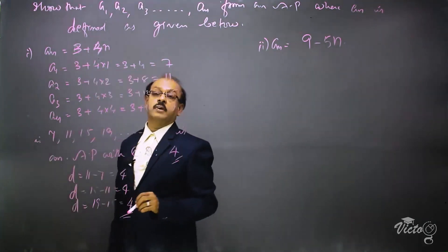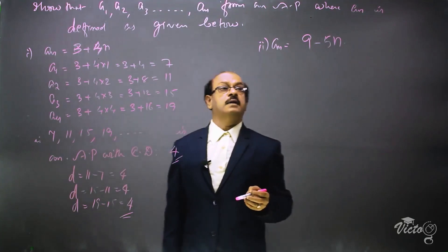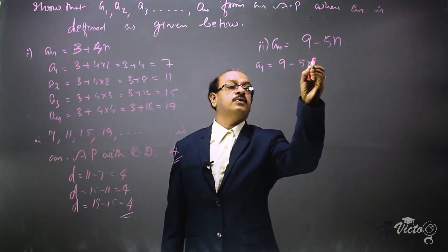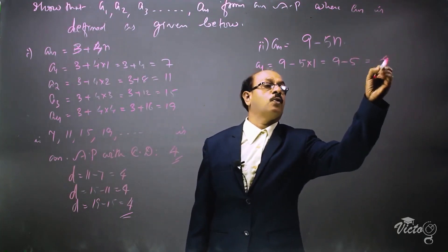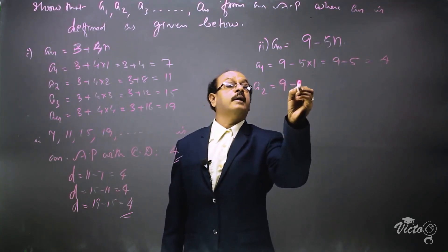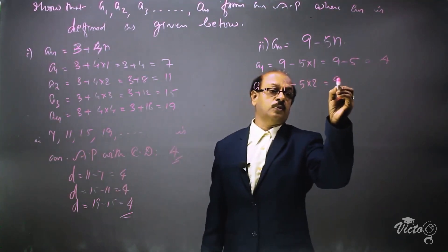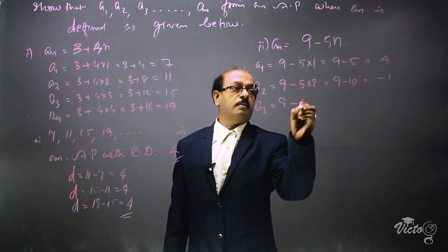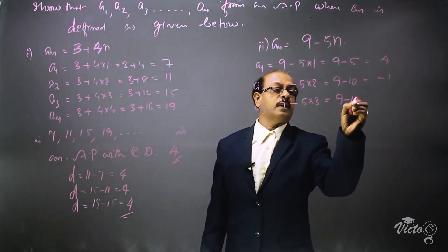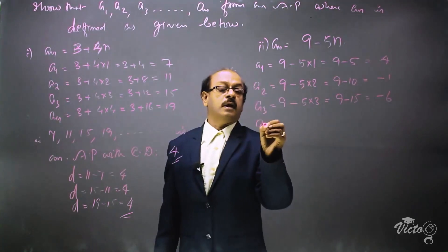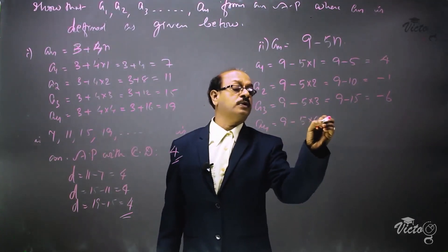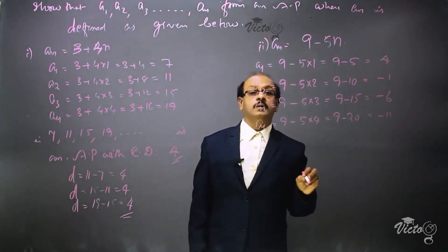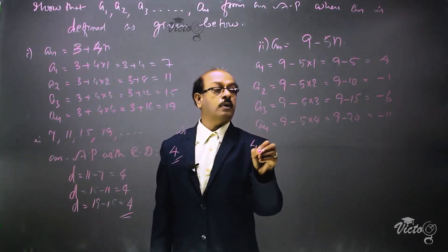In the second case, an = 9 - 5n. So a1 = 9 - 5×1 = 9 - 5 = 4. Then a3 = 9 - 5×3 = 9 - 15 = -6. Then a4 = 9 - 5×4 = 9 - 20 = -11.